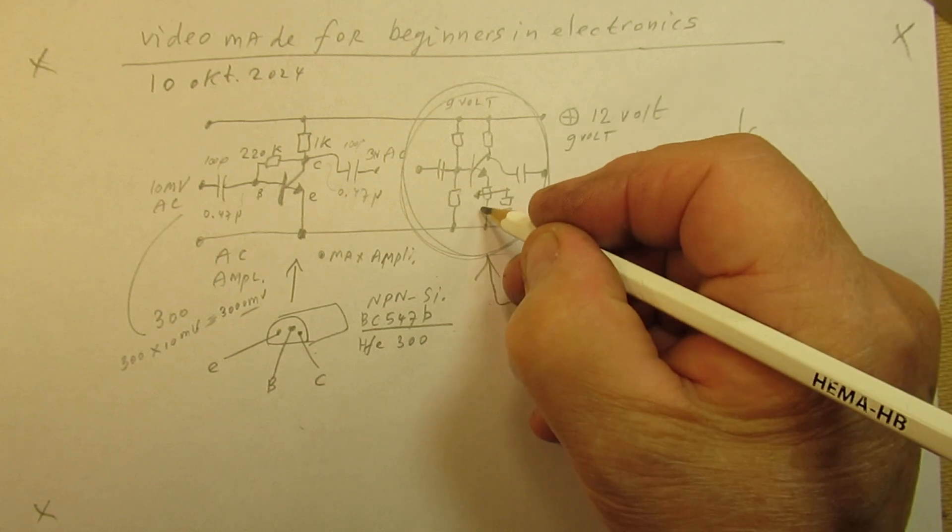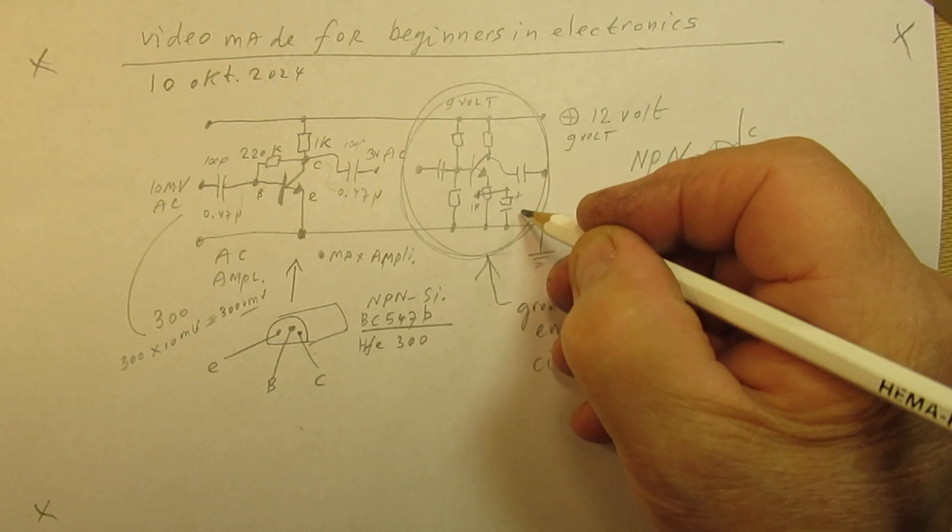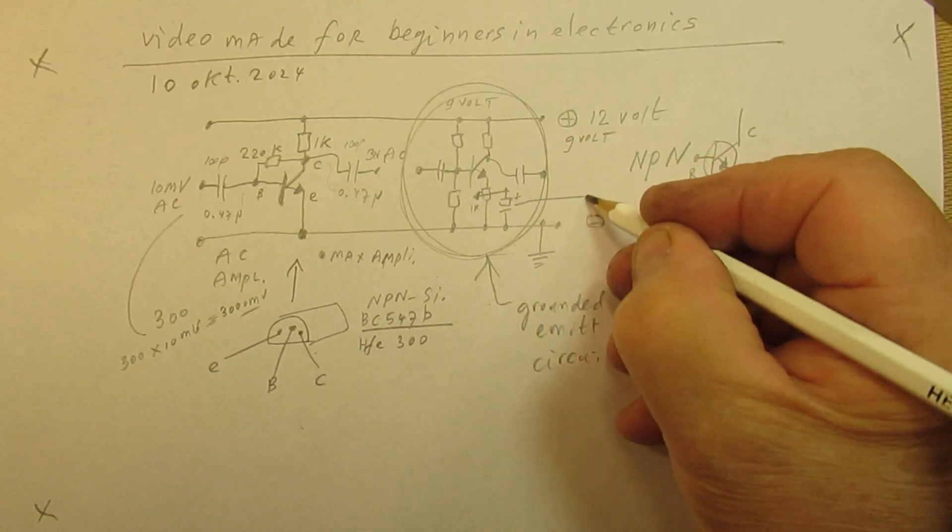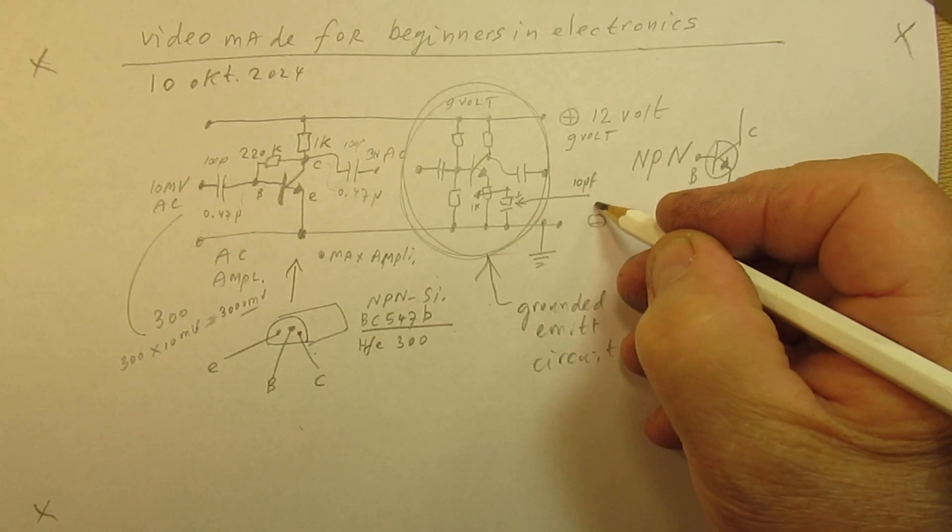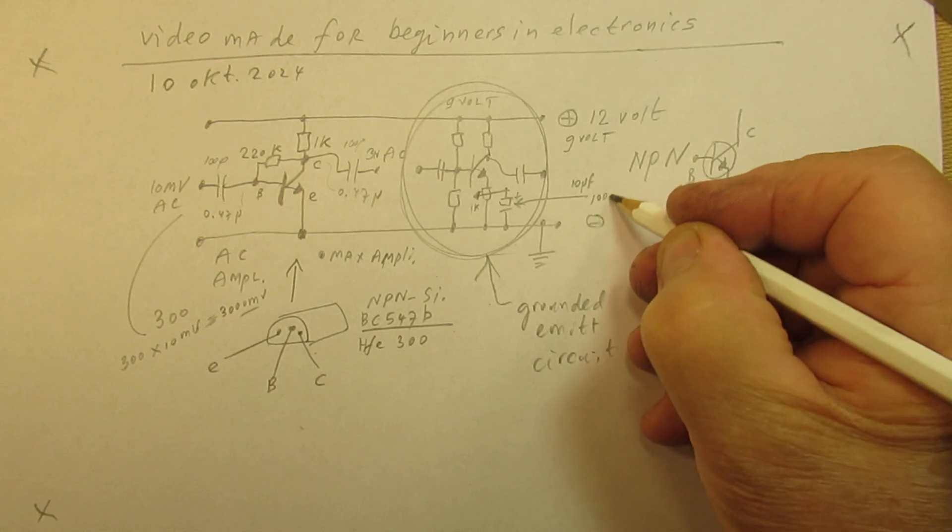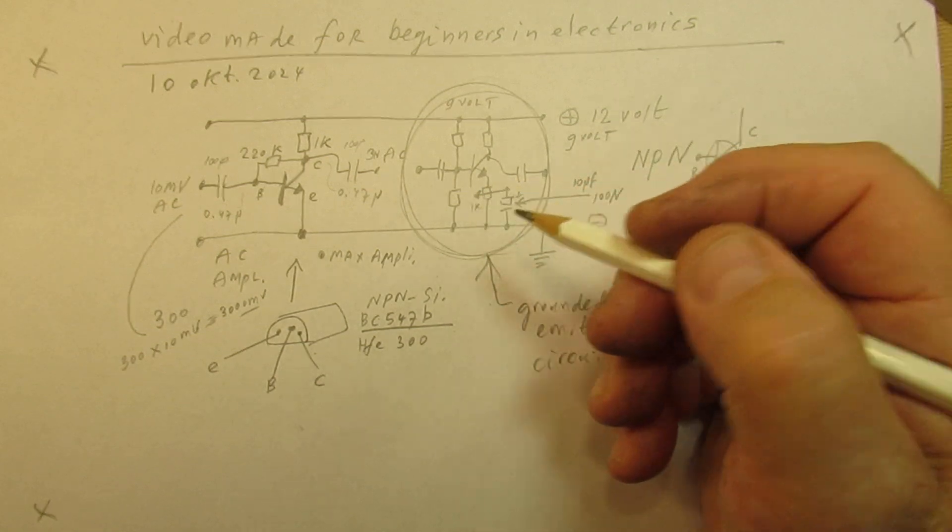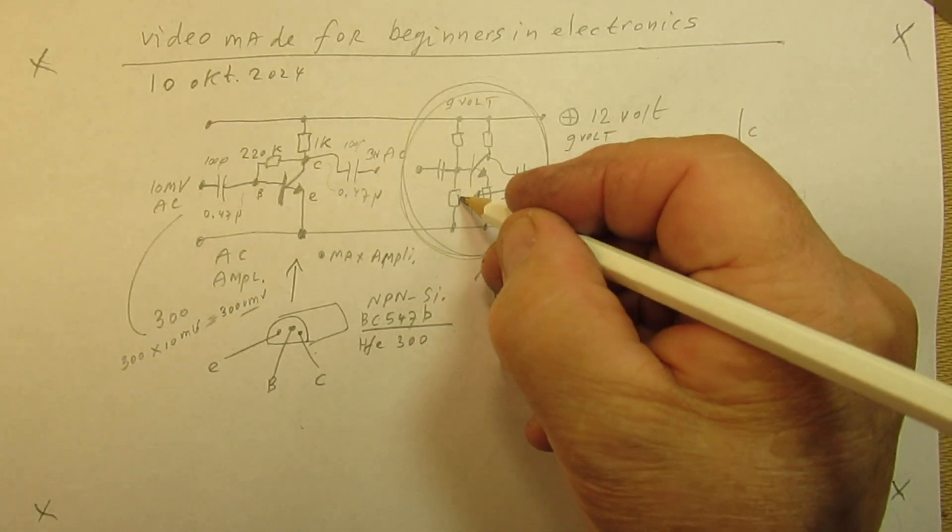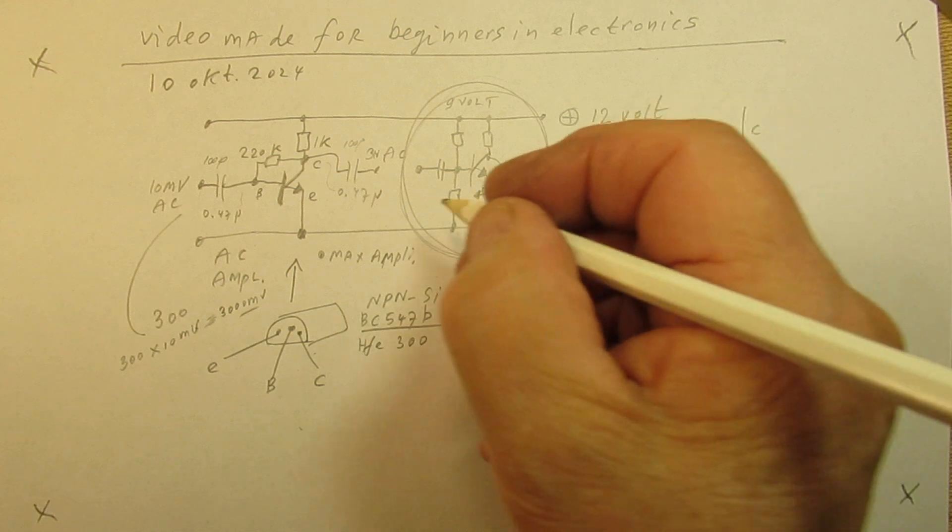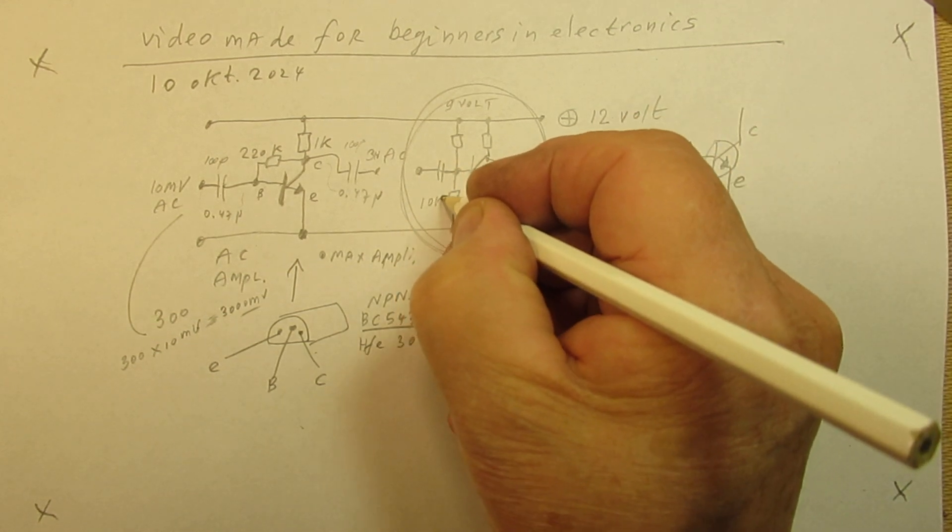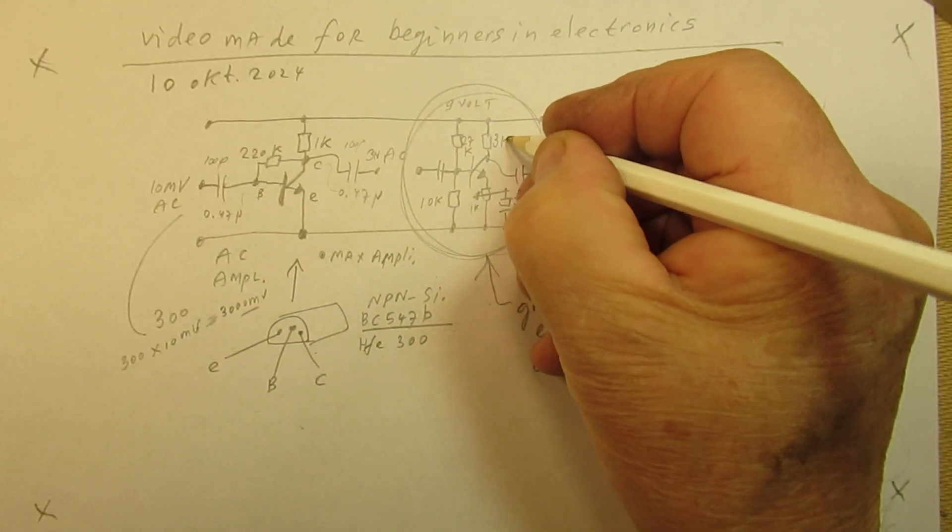Use here for instance 1 kilohm. Use here a capacitor between 10 microfarad and 100 nanofarad. With this potentiometer you set the amplification factor. This resistor must be 10k, and this must be 27k, and here it is 3k3.